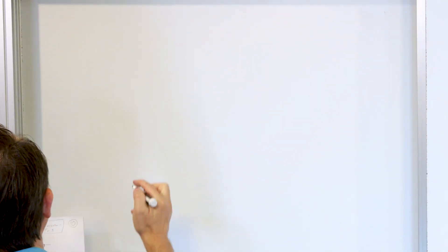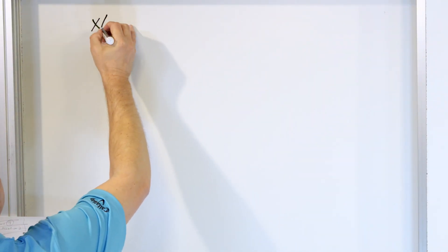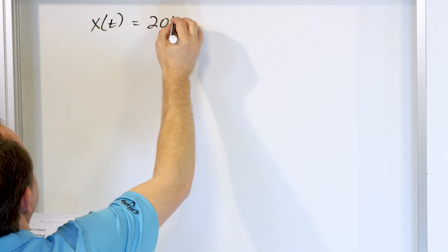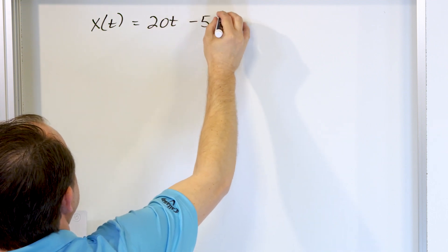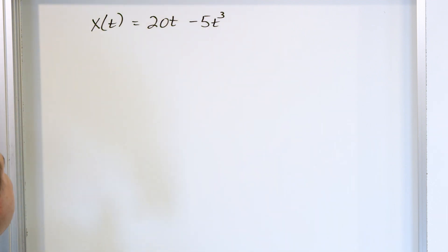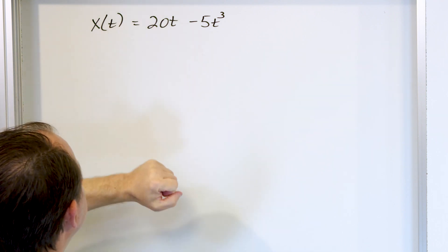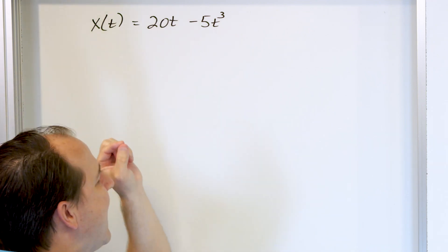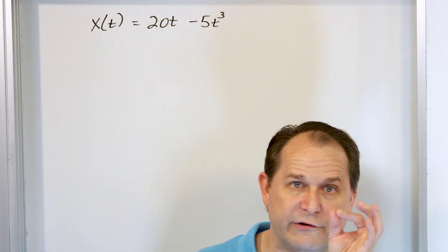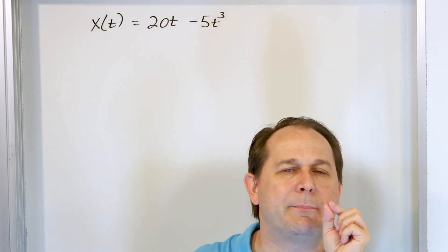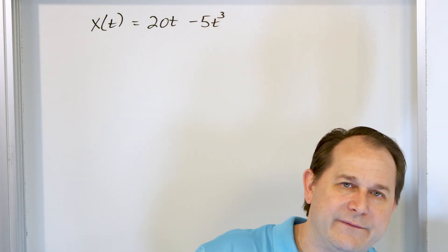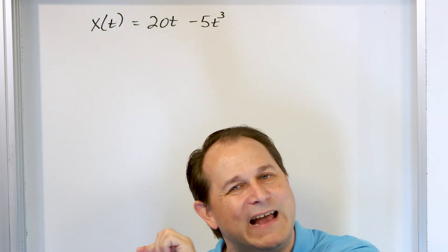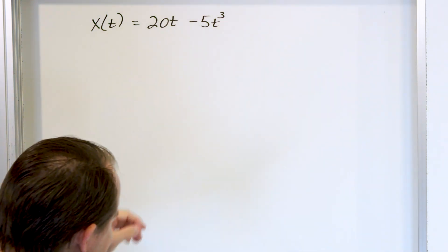For Part A, we are told that the position of the particle is a function of time: x(t) = 20t - 5t³. This equation means I can plug in any time — 0, 1, 2, 3, 4, 5 seconds — and it tells me how far away from the origin the particle is. In one-dimensional motion, a positive x is to the right of the origin and a negative x is on the negative side of the number line.